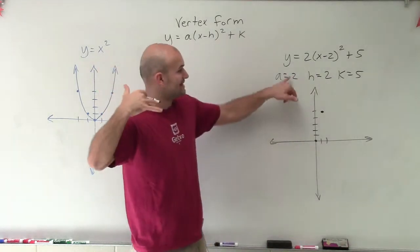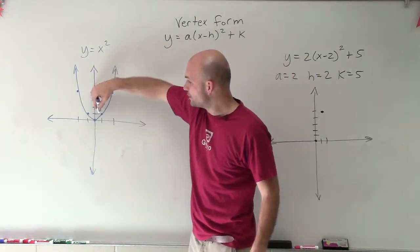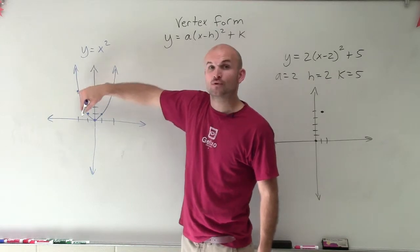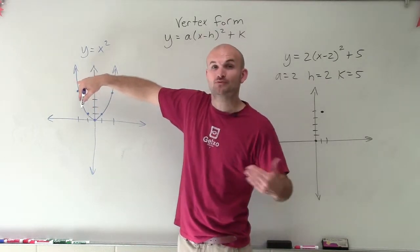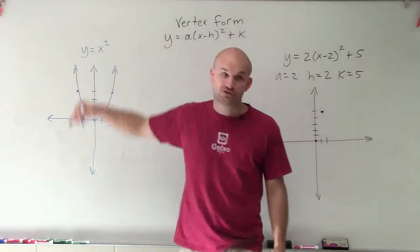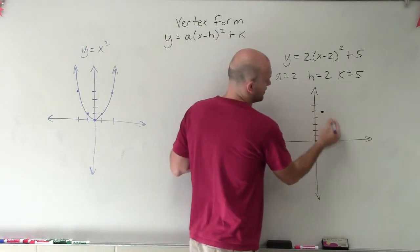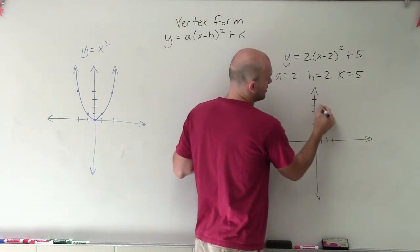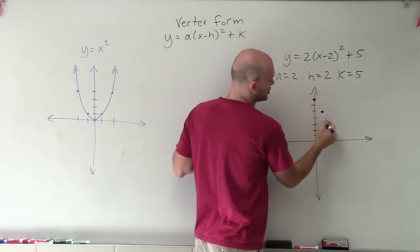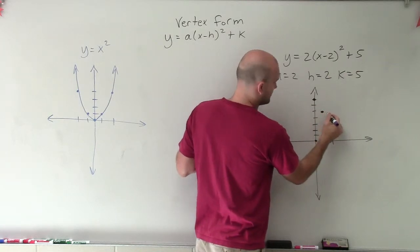But now I'm multiplying that by 2. So instead of going over 1, up 1, now that 1 is being multiplied by 2. So I'm going to go over 1, up 2, because I'm now multiplying it by 2, over 1, up 2.